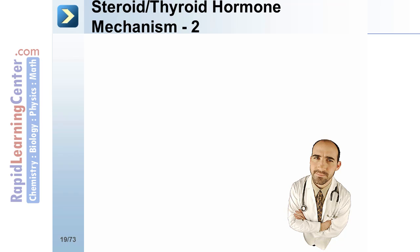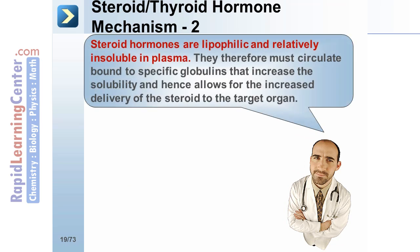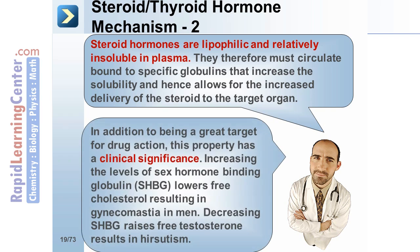Steroid hormones are lipophilic and relatively insoluble in plasma. They therefore must circulate bound to specific globulins that increase solubility and allow for increased delivery of the steroid to the target organ. Increasing the levels of sex hormone binding globulin, or SHBG, lowers free testosterone, resulting in gynecomastia in men. Decreasing SHBG raises free testosterone, resulting in hirsutism.